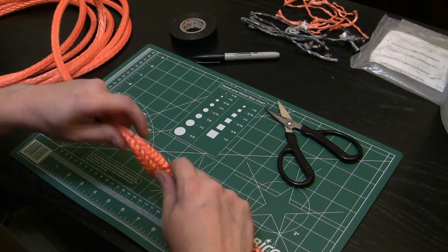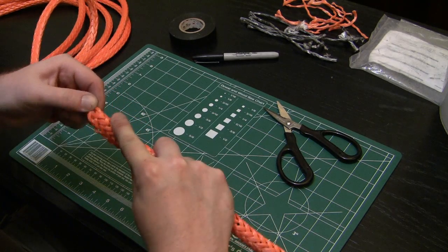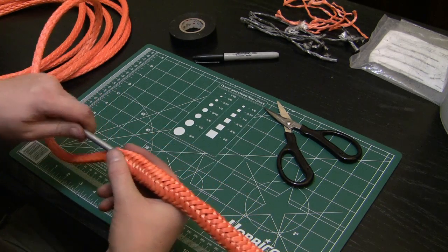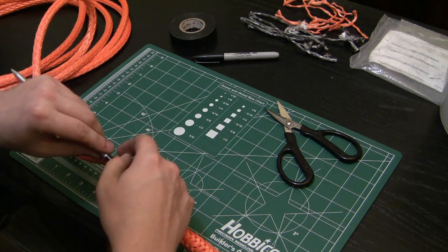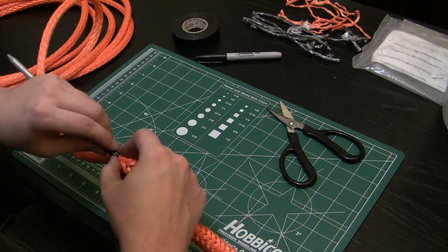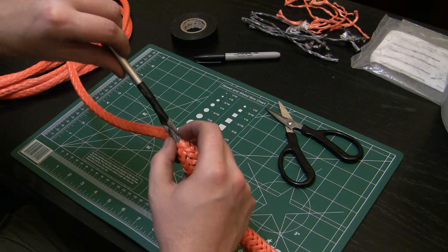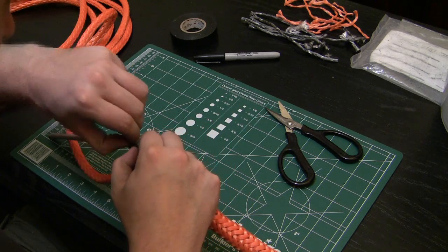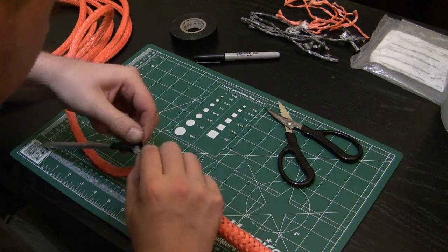Come back down to our exit point, bring it all the way out. Be careful not to catch the fibers on the tape and bring it out so you expose the end of the fid. At this point we can remove the tape.